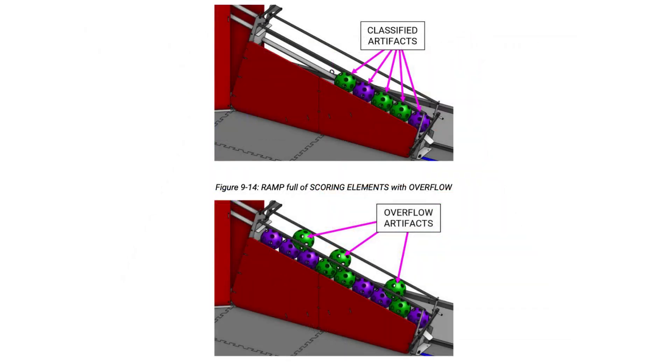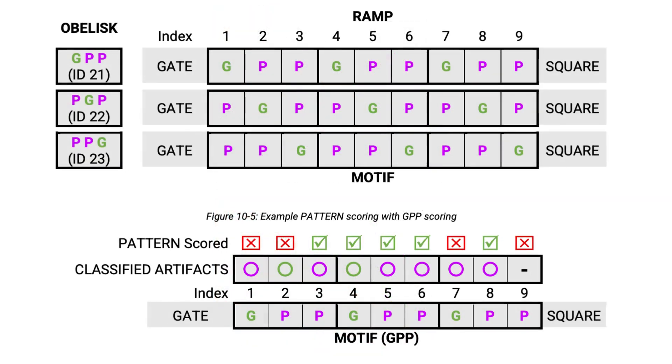The motif scoring really caught our attention too, because it's not about the sets of three, it's about individual ball positioning in the classifier ramp. But here's the thing that stood out. Every motif has two purples and one green, so simple math tells you to focus on scoring purple balls for a two-thirds advantage if you do not have motif scoring capabilities.